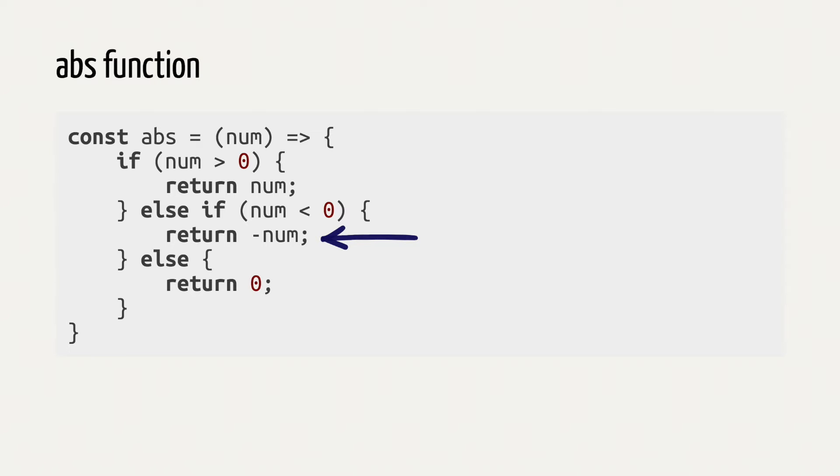There can be multiple else if blocks. Sometimes you have many options. So now, after we've taken care of positive and negative numbers, there's one more option left. What if number is zero?